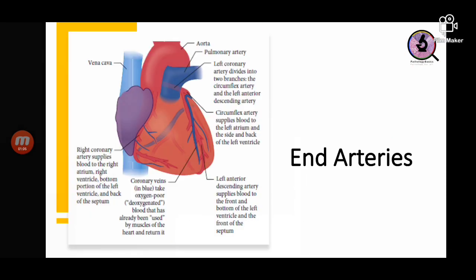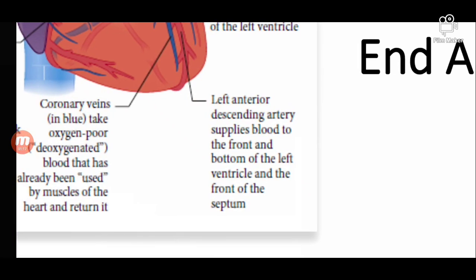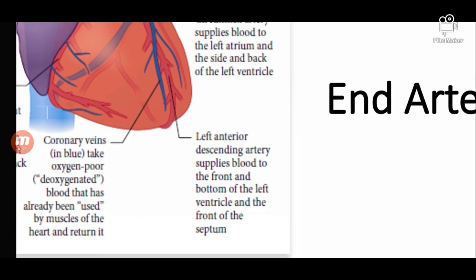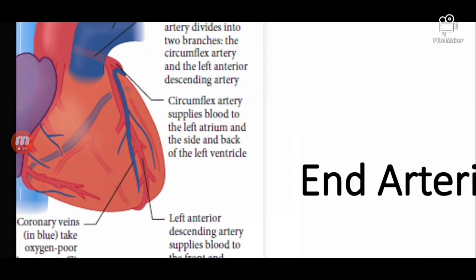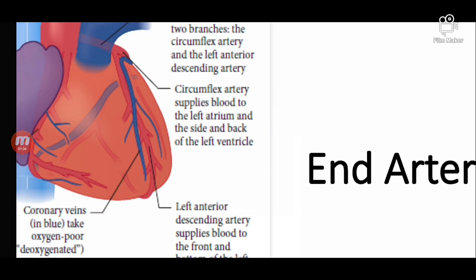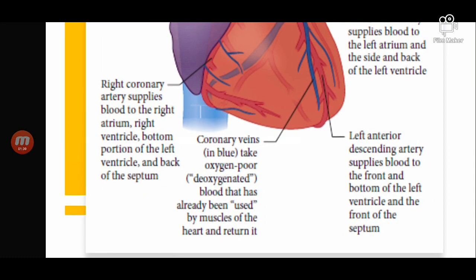Depending on which vessel is blocked, that particular area of the heart will be involved. The left anterior descending artery supplies blood to the front and bottom of the left ventricle and the front of the septum — it is most commonly affected. The left circumflex artery supplies blood to the left atrium and back of the left ventricle. The right coronary artery supplies blood to the right atrium, right ventricle, bottom of the left ventricle, and back of the septum.